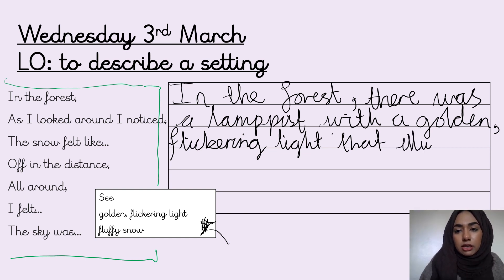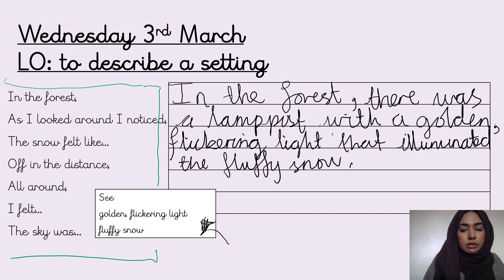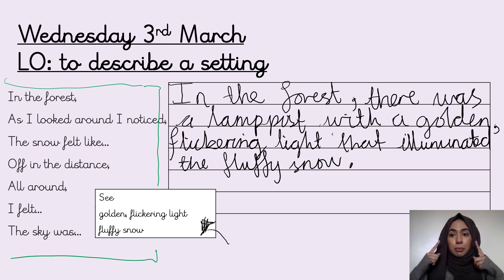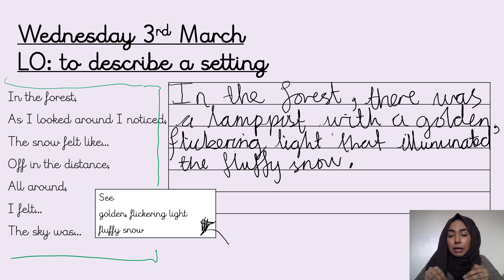It's illuminated — illuminated — the fluffy snow. I'm going to put it in with a full stop. Make sure it has a capital letter, has a full stop, and it's a complete idea. In the forest, there was a lamppost with a golden, flickering light that illuminated the fluffy snow. If you're reading that in your head, you would paint a picture of a lamppost that had a light that was sometimes weak and sometimes bright, illuminating the fluffy snow around it. That's what you want your reader to be able to imagine.